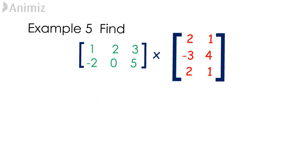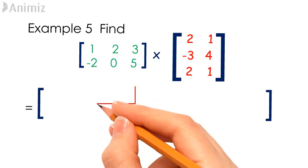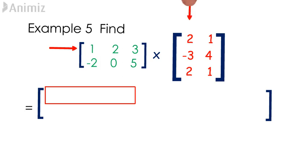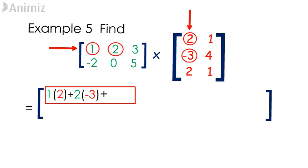Now, let's multiply the two matrices. We know that the resulting matrix is of the order 2 by 2. Let's start by looking for the (1,1) element of the resulting matrix. To do that, add the multiplication outcome of elements from the first row of the first matrix with the elements from the first column of the second matrix. That means computing 1 times 2 plus 2 times negative 3 plus 3 times 2. Doing that gives us the (1,1) element of the resulting matrix, which is 2.